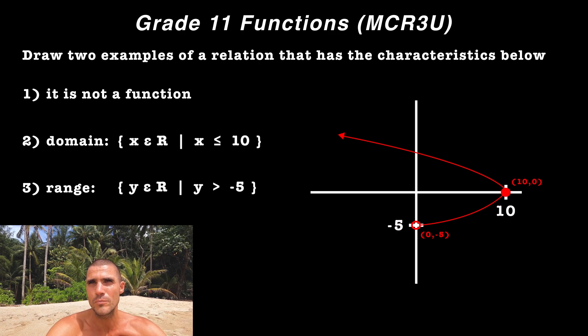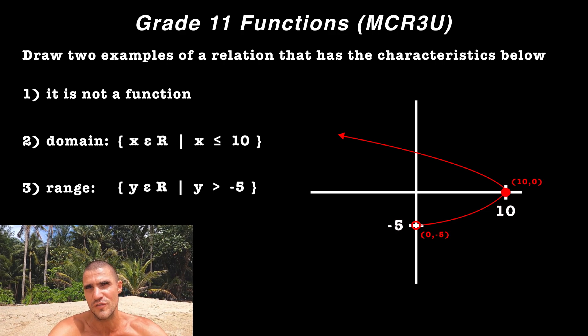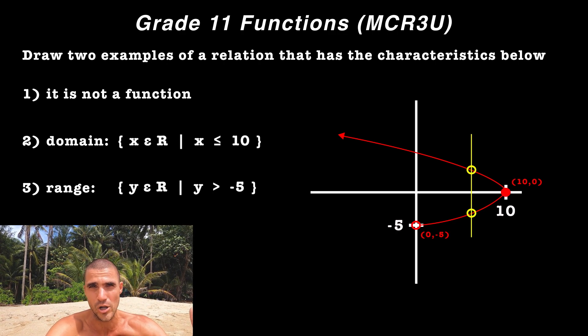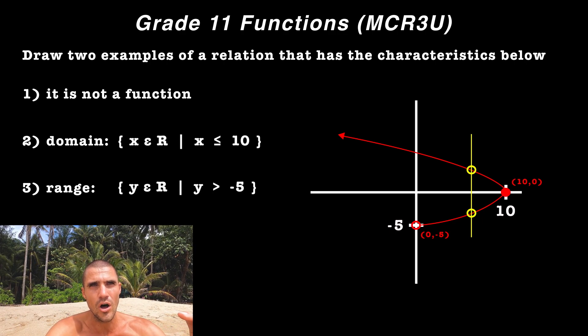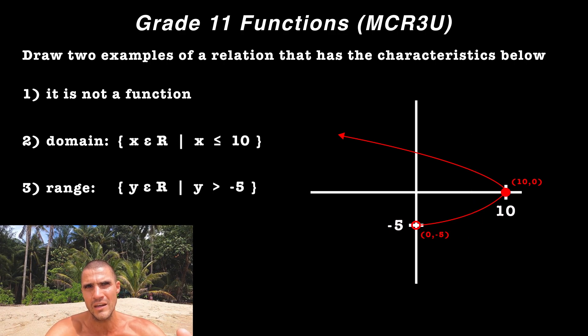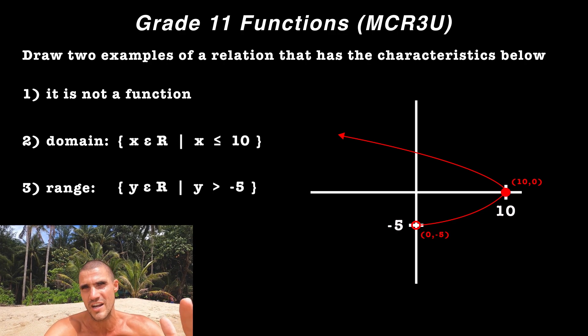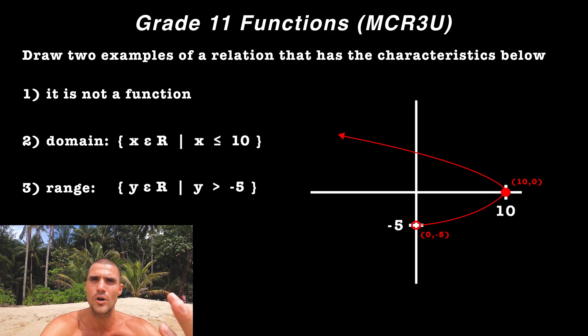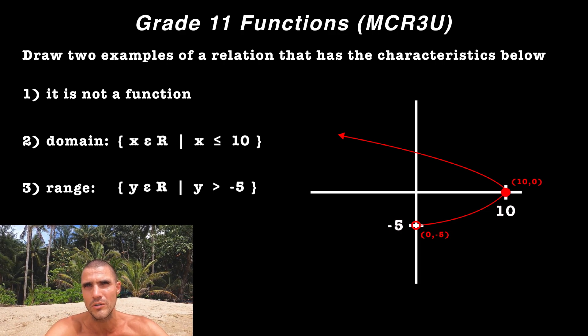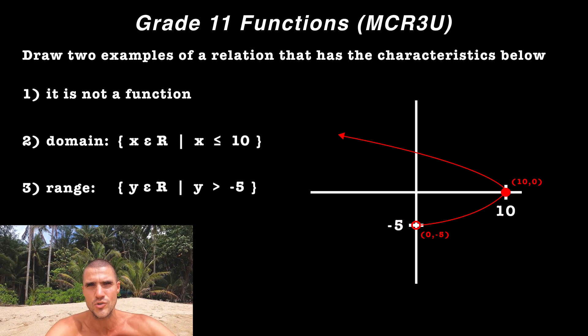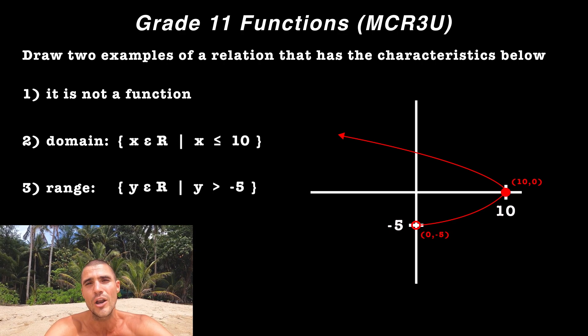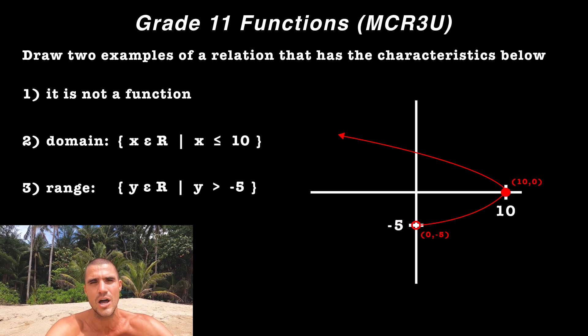And notice that that would be a relation that's not a function, it's failing the vertical line test at multiple points. And it would also have a domain where X ∈ R and X ≤ 10. And it would also have a range where Y ∈ R and Y > -5, not including the negative five because it's a hole.